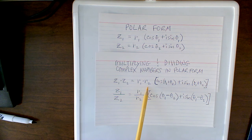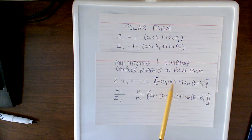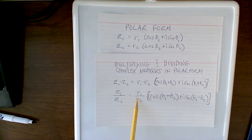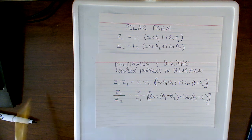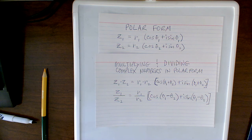I take the two thetas and add them, the same thing with the thetas on the sine. So multiplying two numbers I use this formula, and then dividing two numbers I use this formula, which is r1 divided by r2, and then you subtract the two thetas. So let's do an example problem on that.